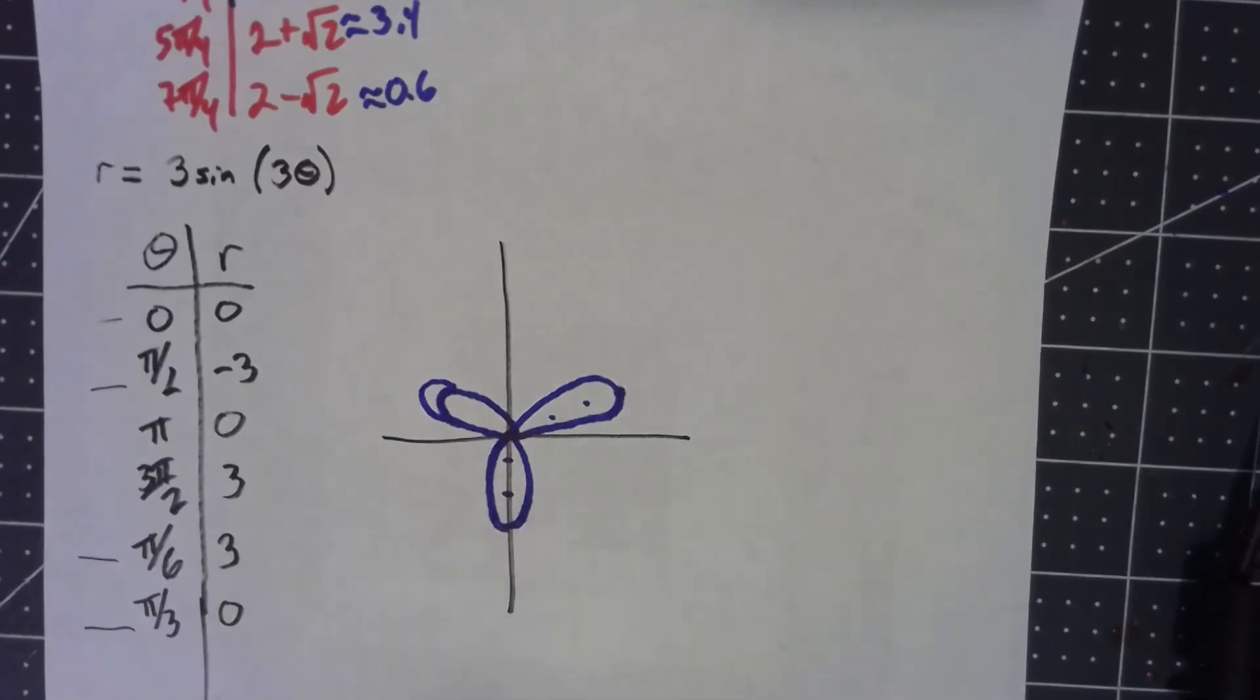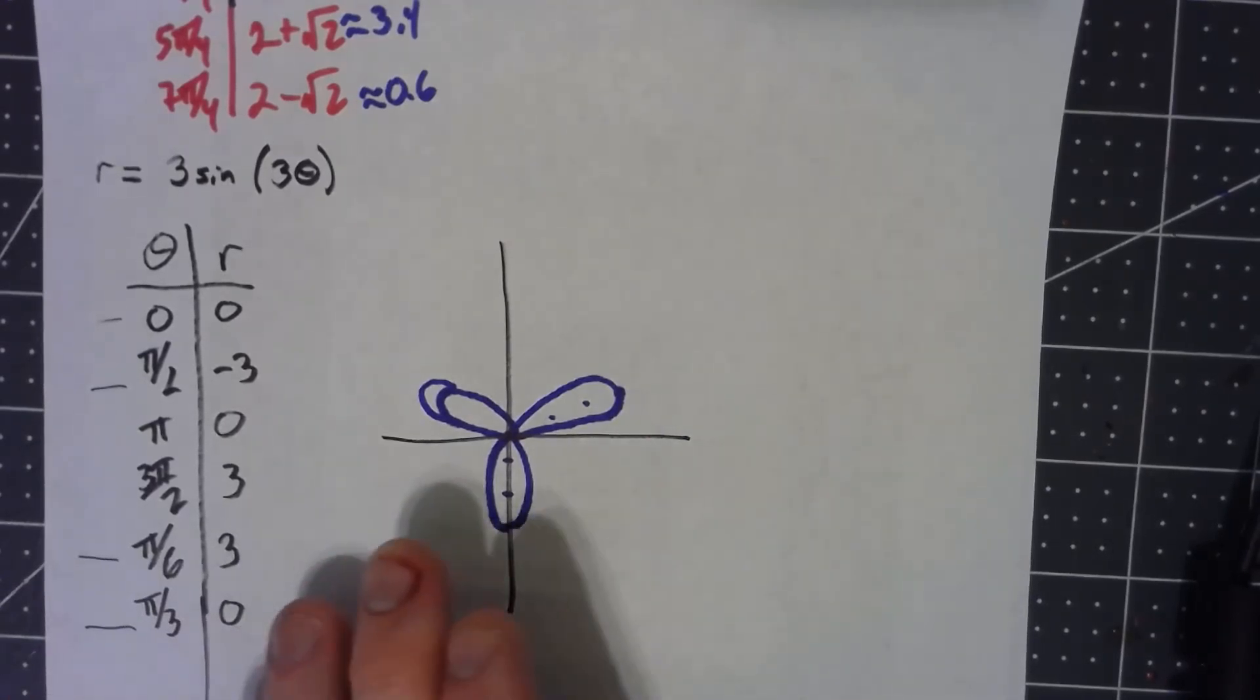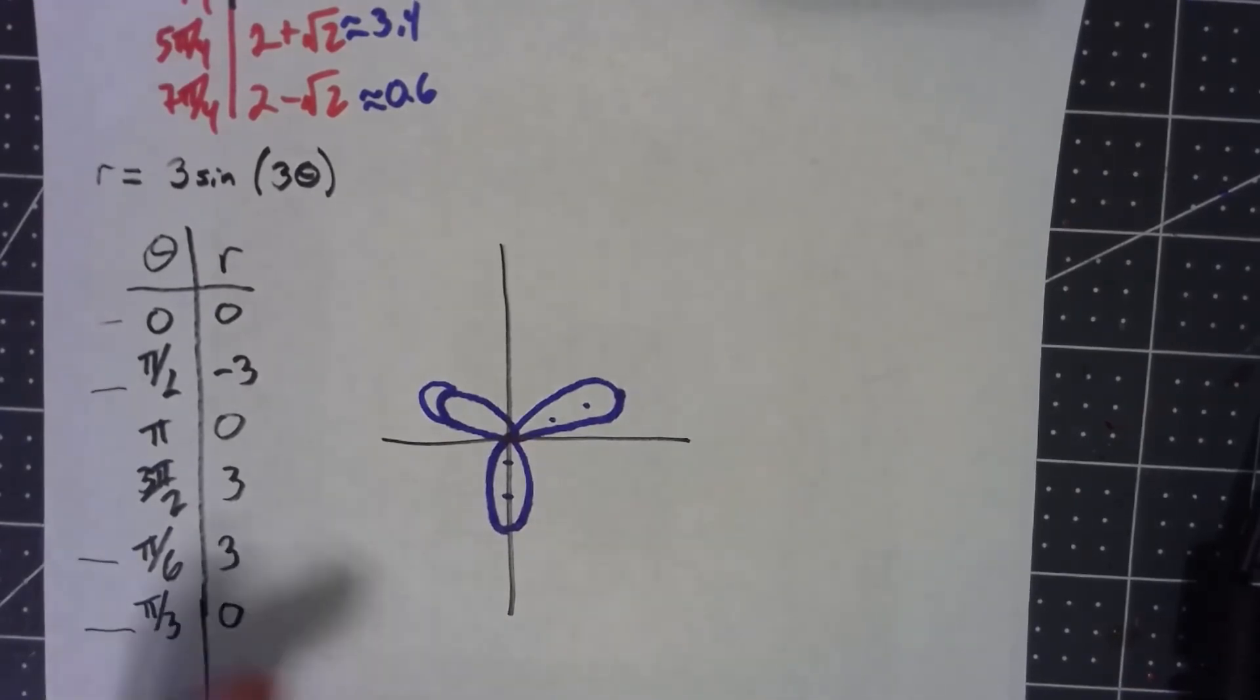This kind of curve is called a rose curve. And again, there's all sorts of tricks to knowing what they look like if you start studying them. But honestly, just plotting points, you'll get there. You just might have to do a little bit more work than if you do some tricks.